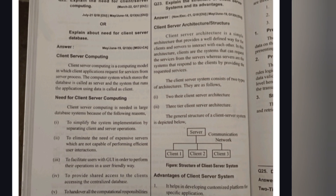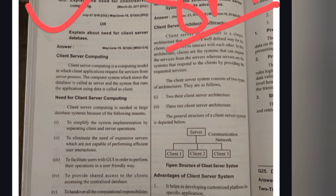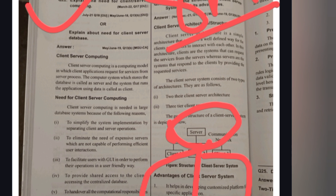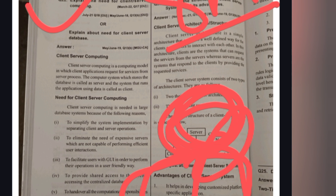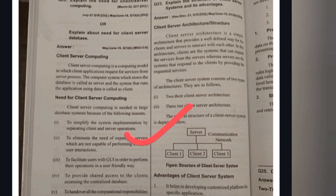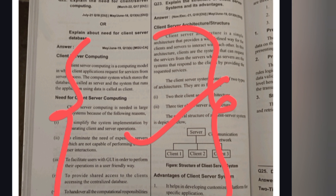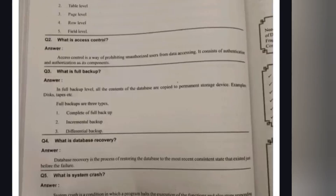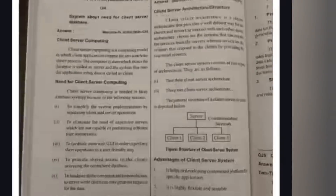The last important question is Client-Server Architecture, which is an eight-mark question. In client-server architecture, a server provides information to multiple clients — for example, three clients receiving data from one server. Remember the diagram and write the full answer in your own words.